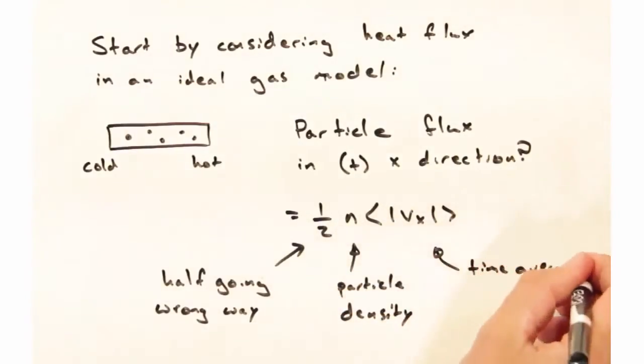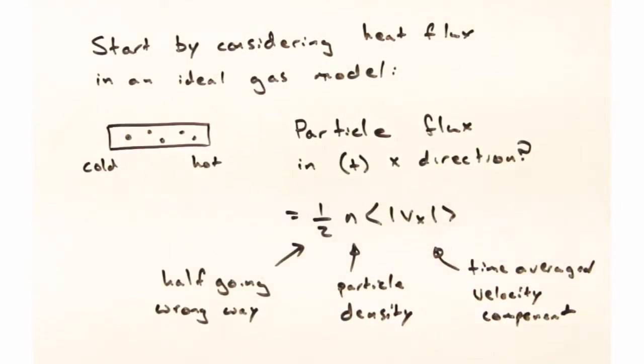If I think about the flux in the positive x direction, you can imagine that that's going to be related to the velocity of those particles in the x direction, as well as the number density of particles. However, half are going to be going the wrong way, and so we have this half term up front.